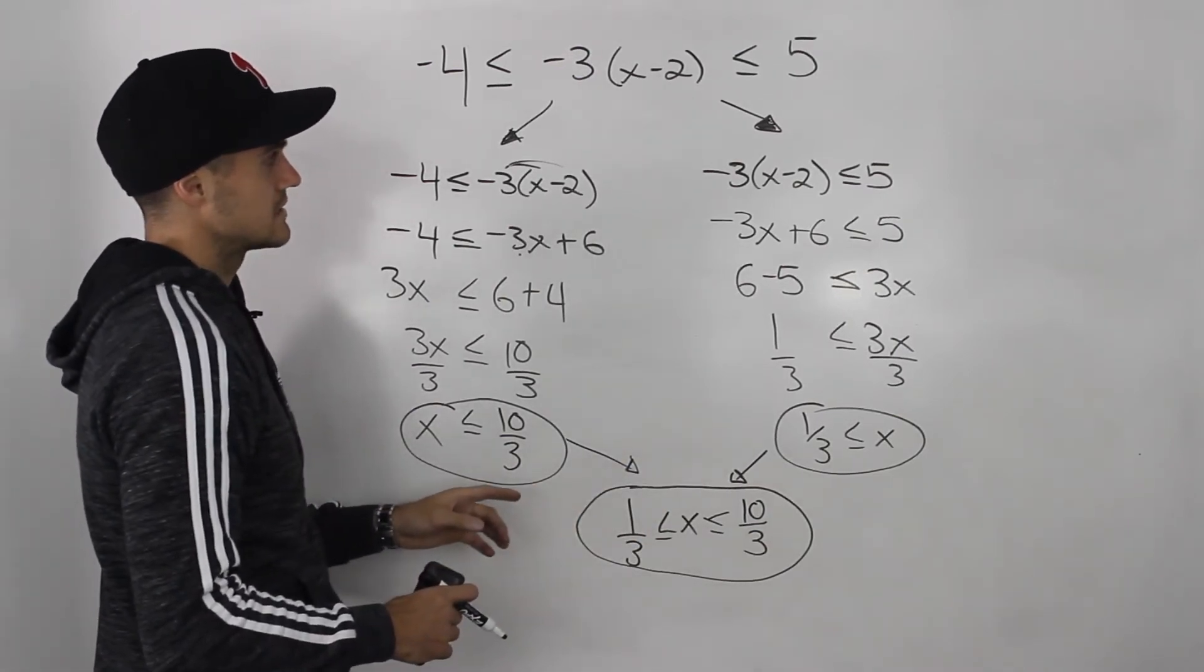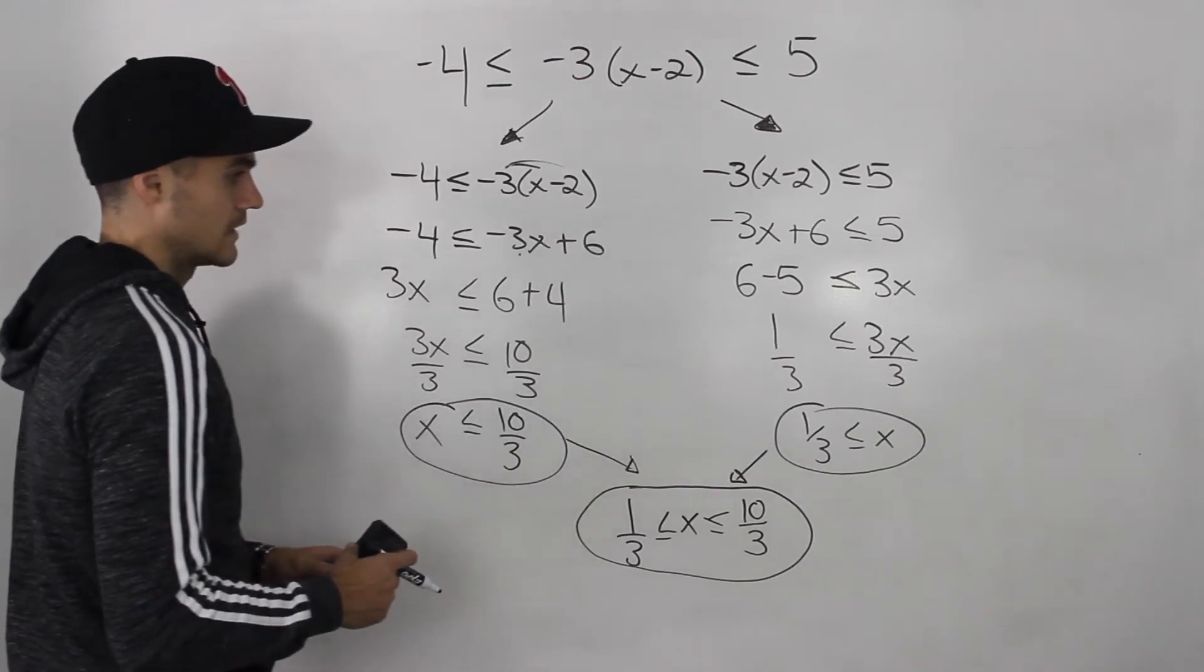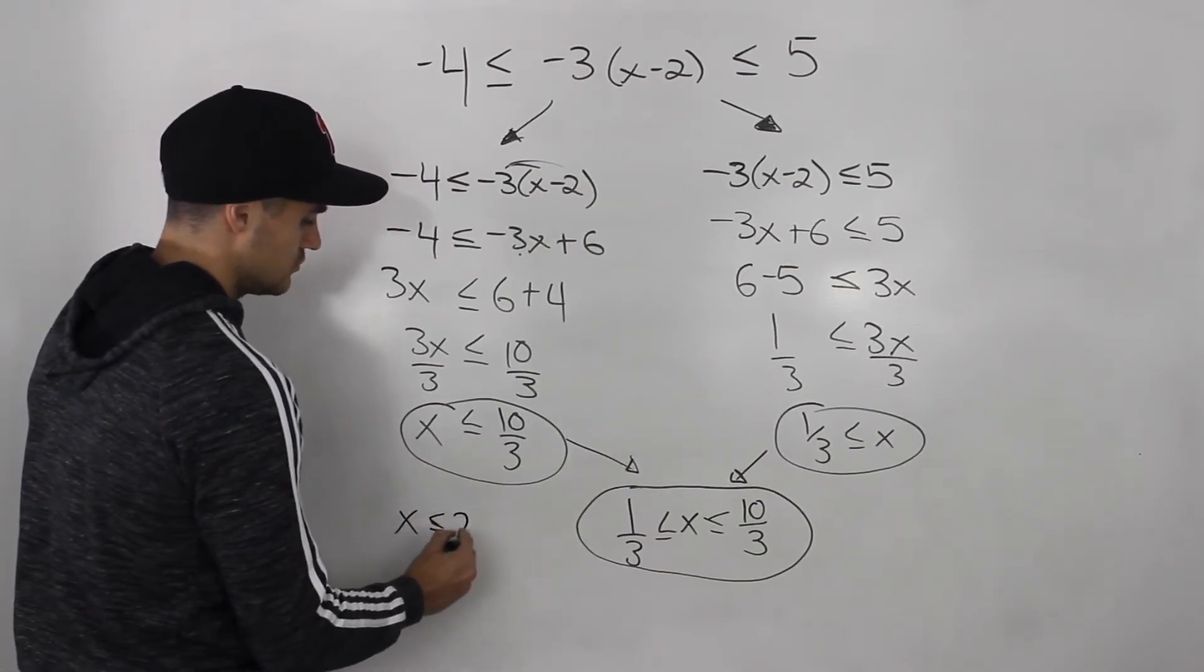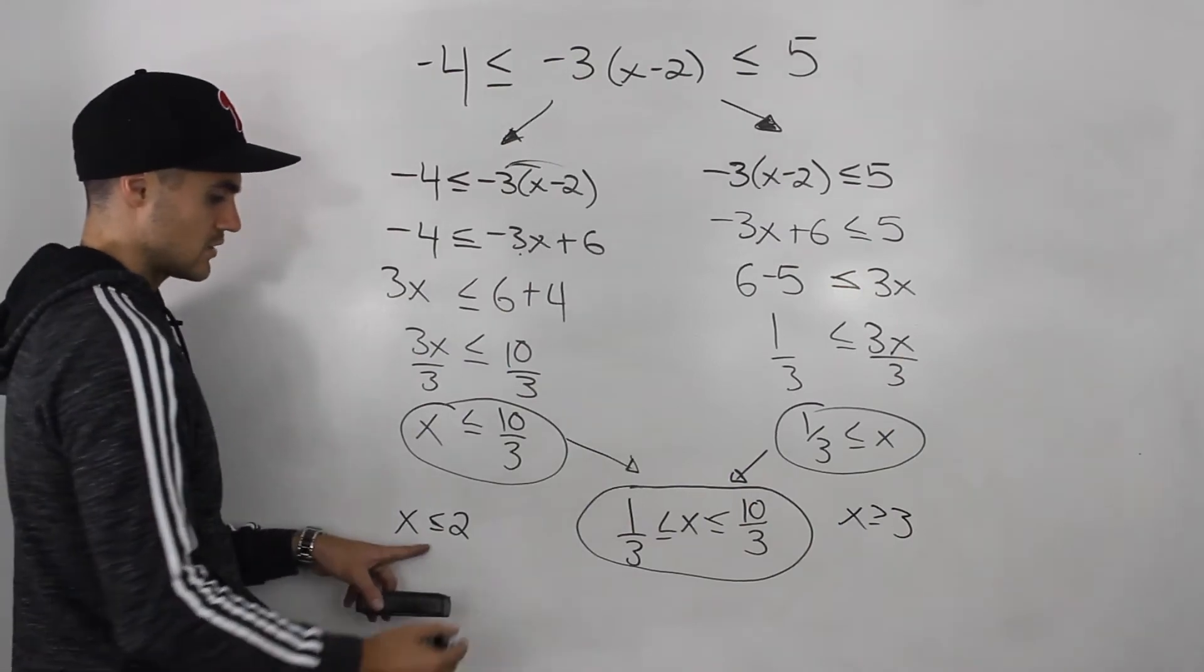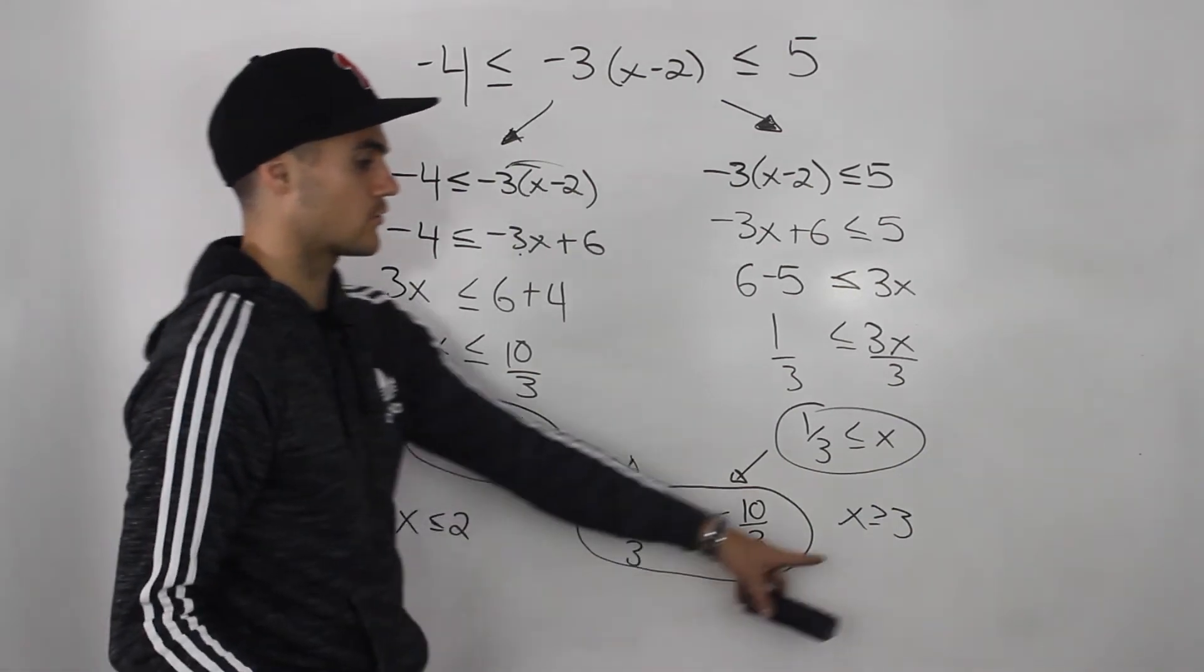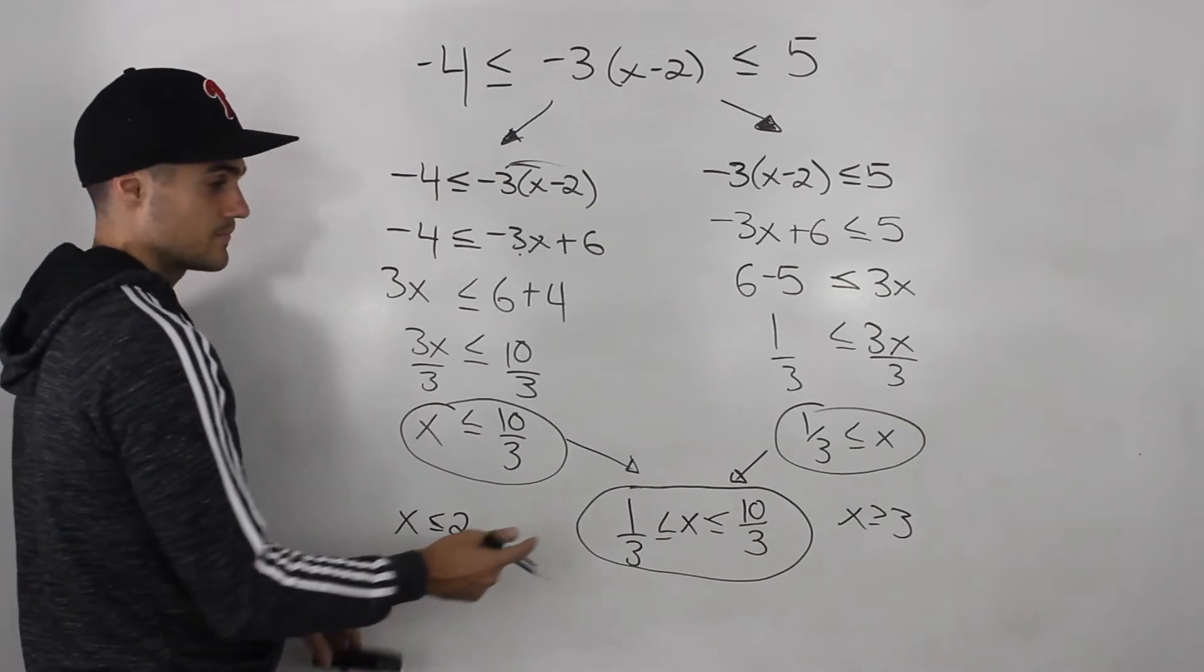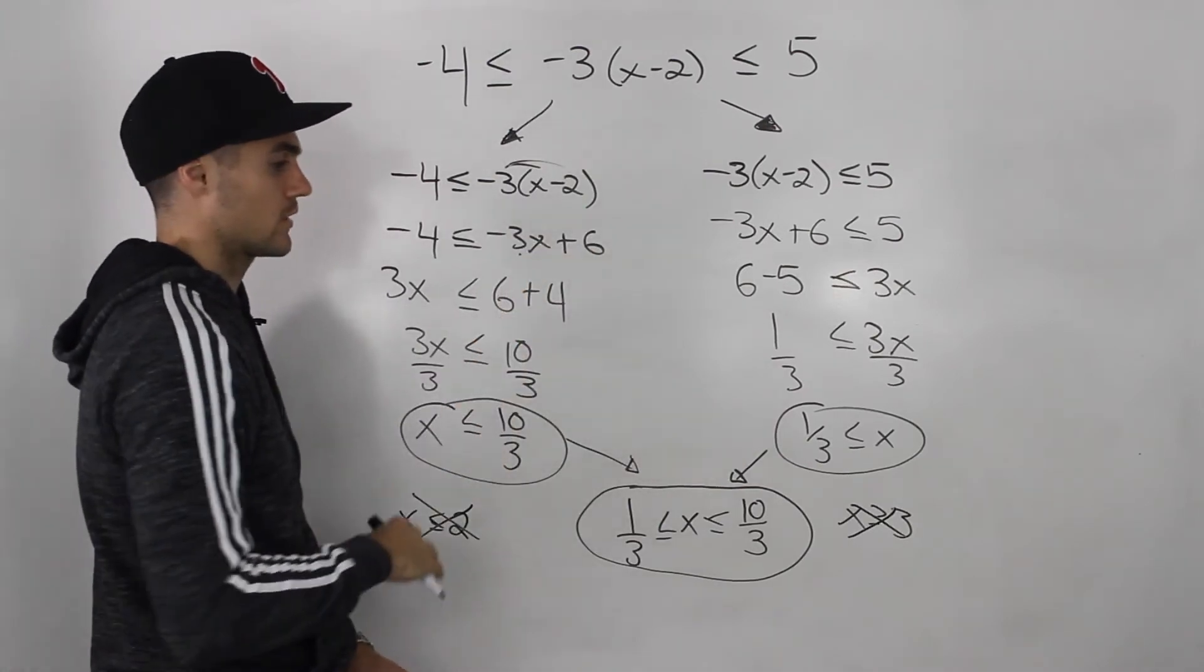Now, there is a chance that you can get non-valid solutions for double inequality. So for example, let's say that the solution to this one, just as an example, let's say that x has to be less than or equal to 2. And this one was x has to be greater than or equal to 3. Well, is there a way to combine these two? Can the x value be both less than or equal to 2 and greater than or equal to 3? No, that's impossible. There's no number that would work combining both of these. So if you got answers like that for both of these, then you know that the double inequality you'd be working with would have no solution.